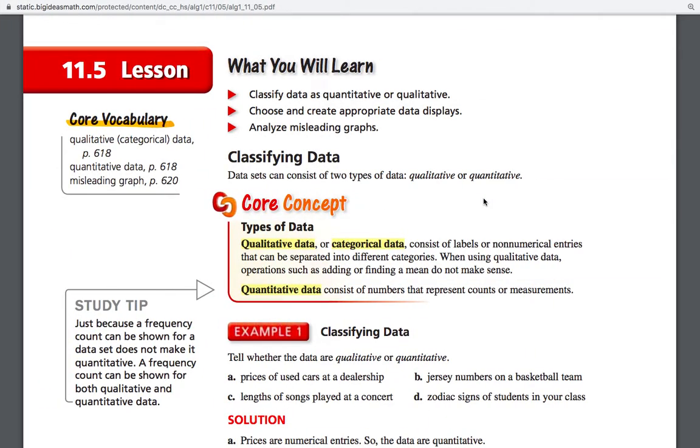All right, guys, 11.5, the last section that we have in the book here. A couple of things to do with data and classifying and representing data, so different types of graphs and stuff like that. And then we'll get into misleading graphs at the end.